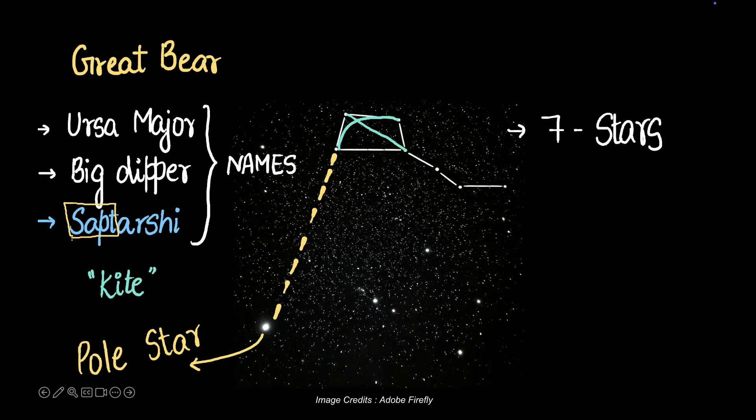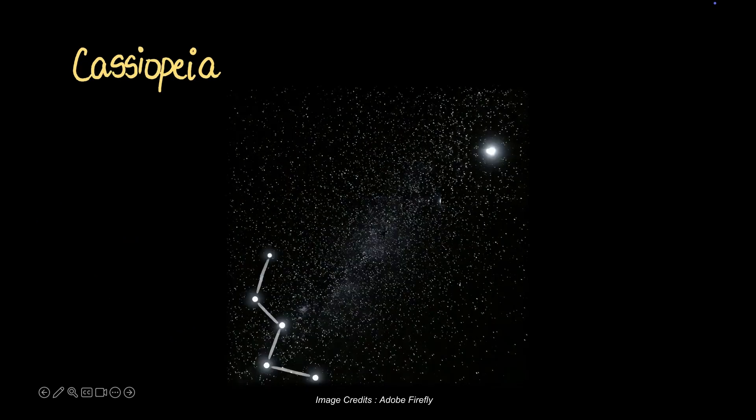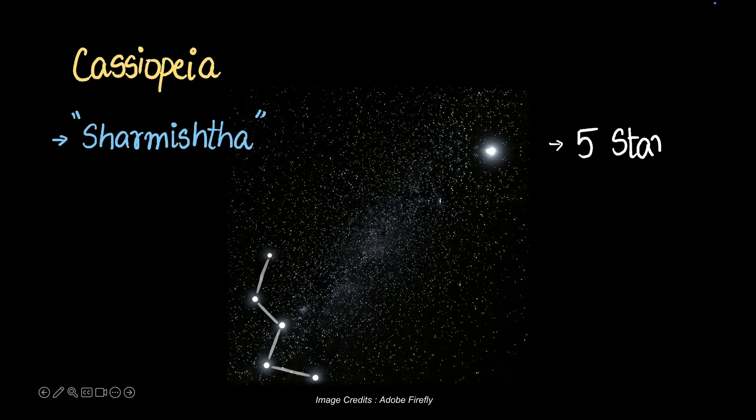Okay, now let's move to the next constellation, Cassiopeia. This in India is called Sharmishta and this is made of five stars. It has a W-shaped or M-shaped appearance depending on how you look at it, and this also has in its vicinity the Polestar. And it's very interesting how this is related to the Polestar.